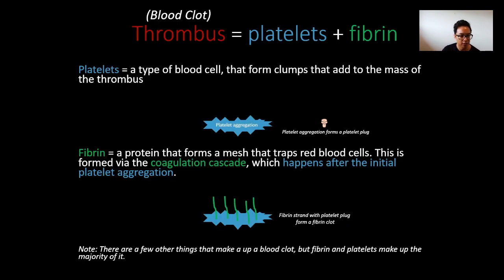Let's start by defining a few keywords. A blood clot is a thrombus, made up of both platelets and fibrin. Platelets are a type of blood cell that form clumps, adding to the mass of the thrombus — they form the platelet aggregation, which then forms a platelet plug. This isn't super stable on its own, so fibrin is then formed. Fibrin is a protein that forms a mesh trapping red blood cells, produced via the coagulation cascade which happens after the initial platelet aggregation.